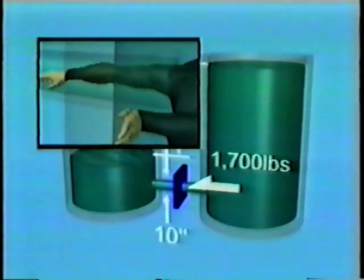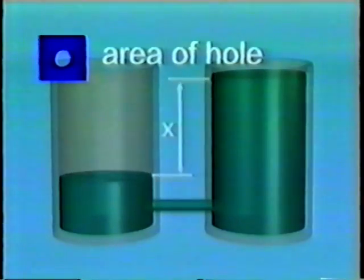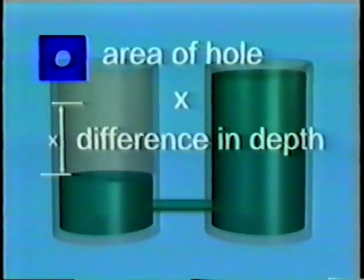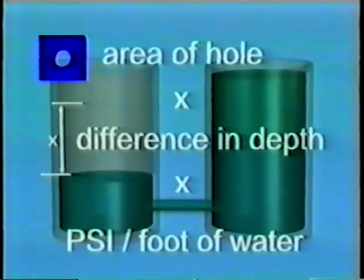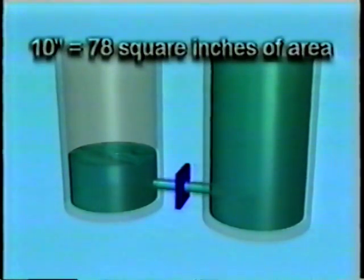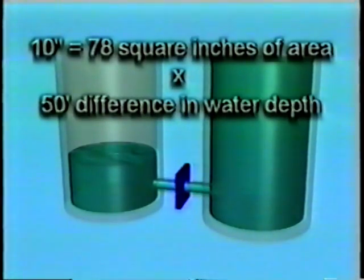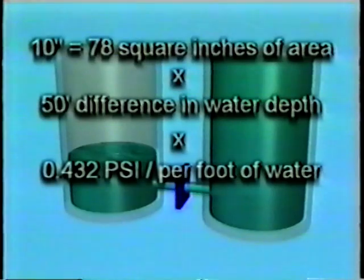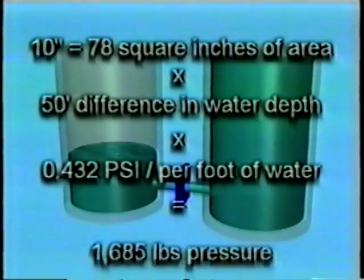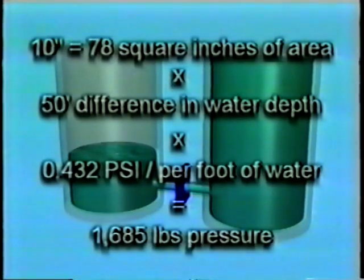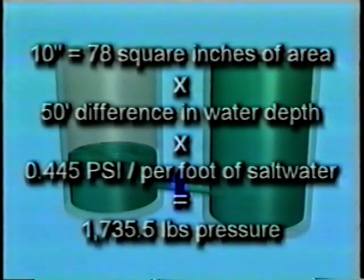The formula for calculating the force of water through a hole at a particular depth is: the area of the hole multiplied by the difference in water depth, multiplied by the PSI per foot of water depth. In the situation just described, a 10-inch hole equals 78 square inches, times 50 feet of water depth, times 0.432 PSI per foot of freshwater depth, equals 1,685 pounds of water pressure. If you are diving in saltwater, use 0.445 PSI in your formula instead.